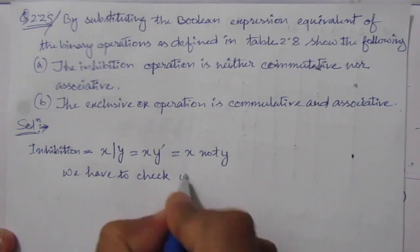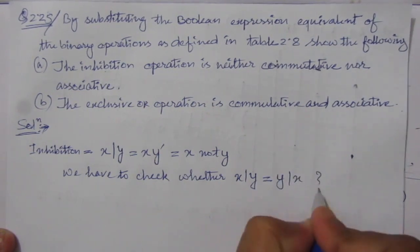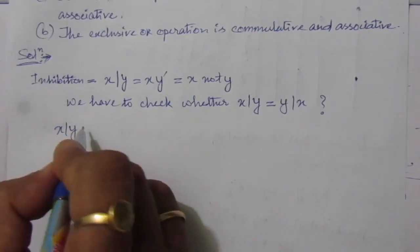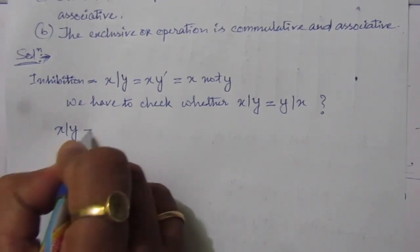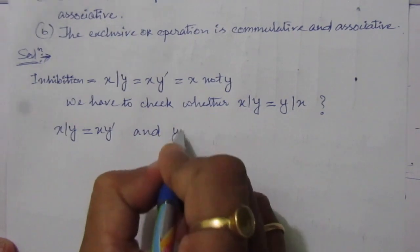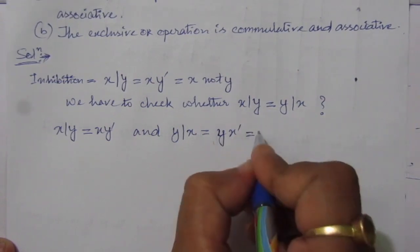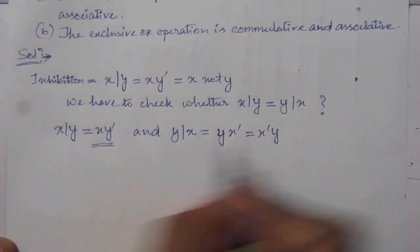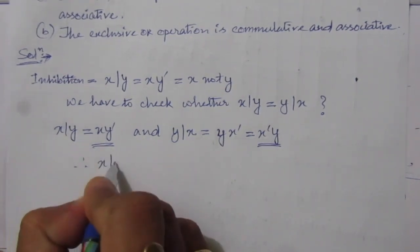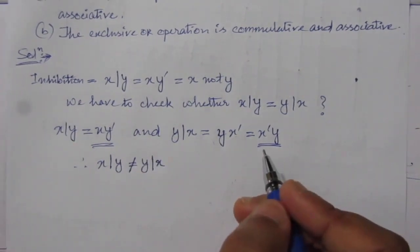We have to check whether x inhibition y equals y inhibition x. We can see that x inhibition y equals x·y̅, and y inhibition x equals y·x̅, which we can also write as x̅·y. This term and that term are not equal. Therefore, x inhibition y ≠ y inhibition x, so this inhibition operation is not commutative.